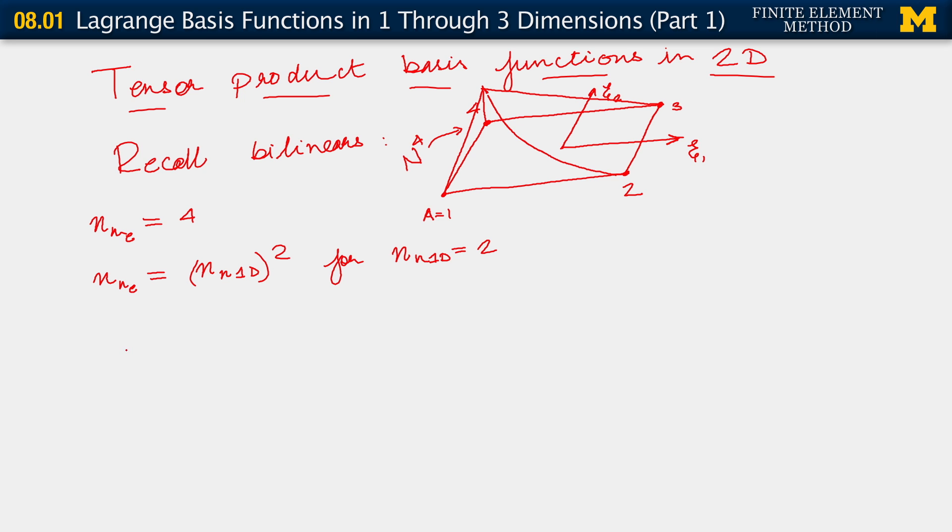What we are going to do here is observe that we always have some N_A of C1, C2. It's a function of C1 and C2, is going to be written as a product of N tilde B of C1 times N tilde C of C2.